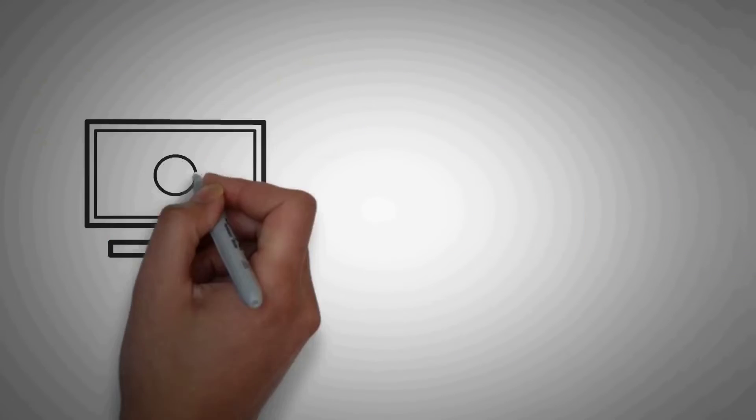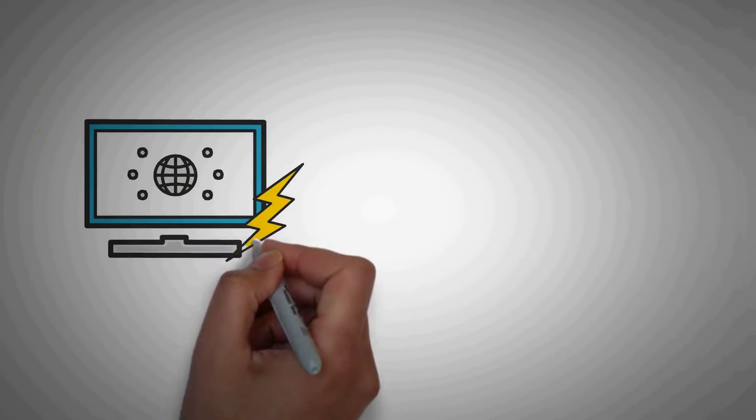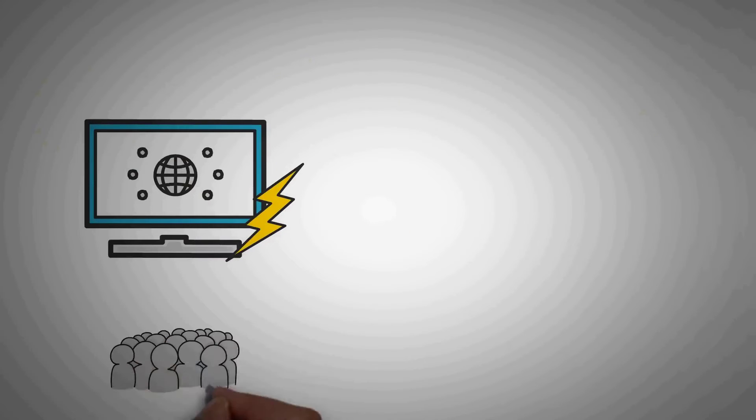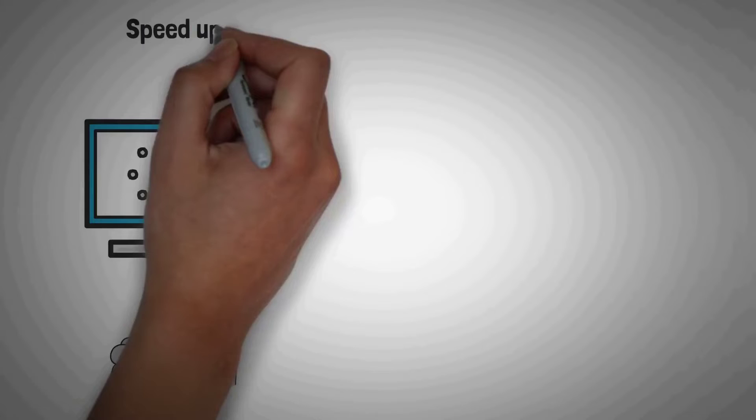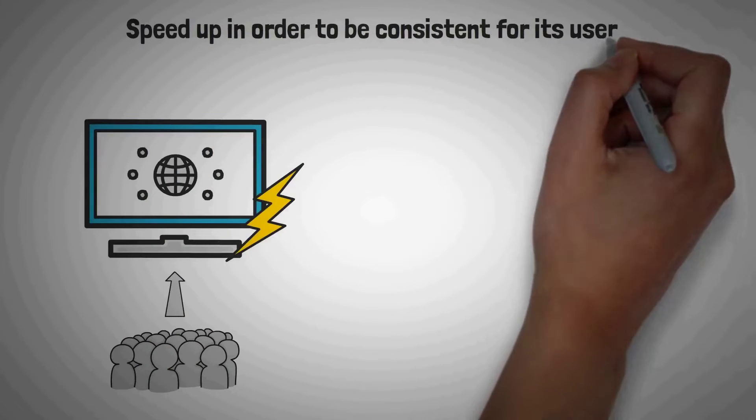Now, as Hoskinson has said, we actually want things to speed up as more users use a system, not slow down as many of them do. If the network is being used, it needs to speed up in order to be consistent for its users.